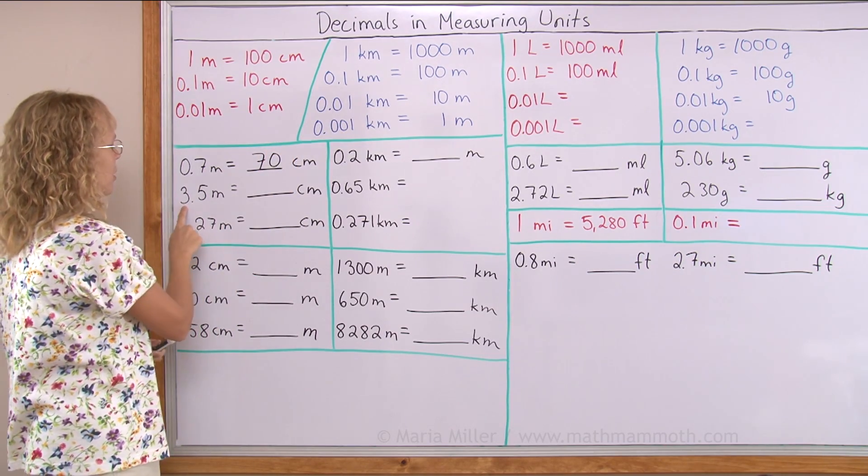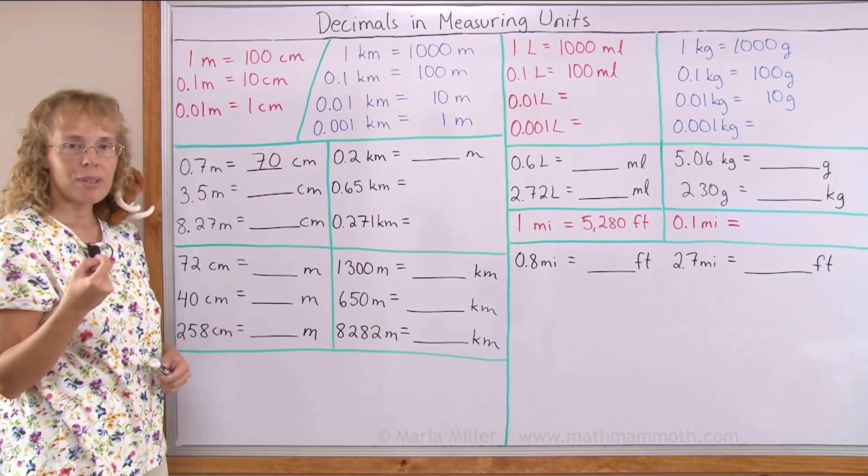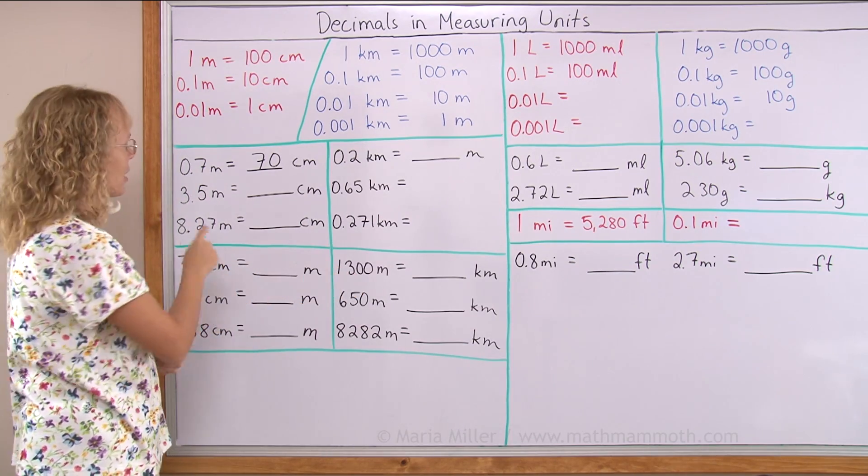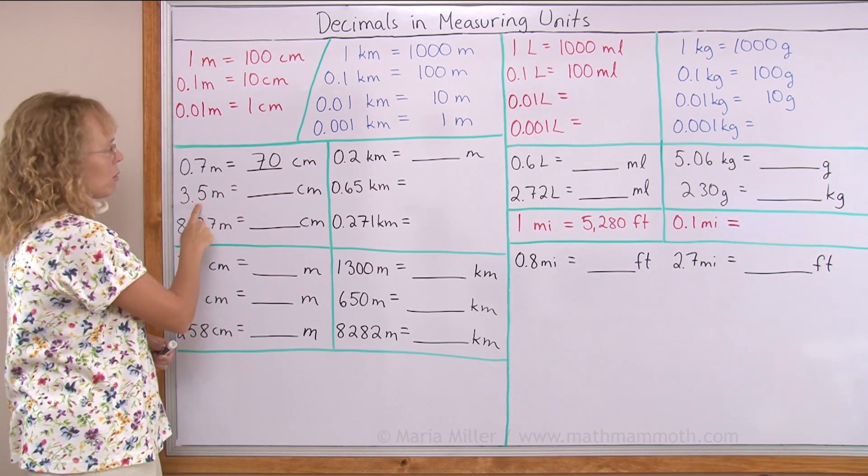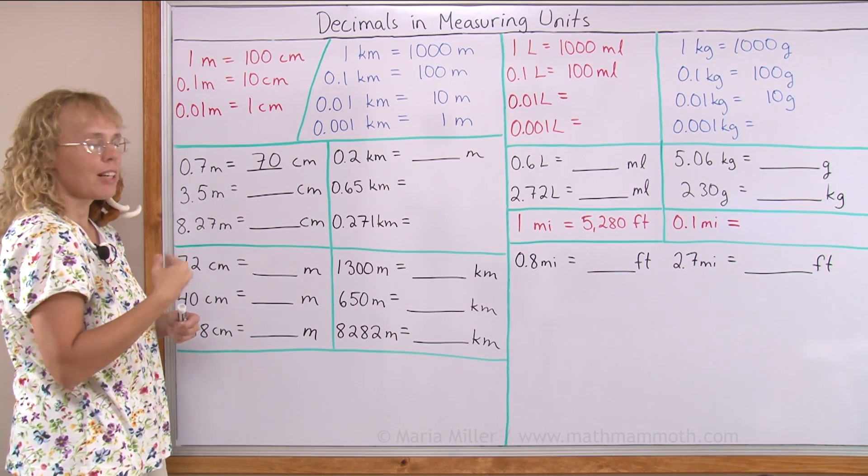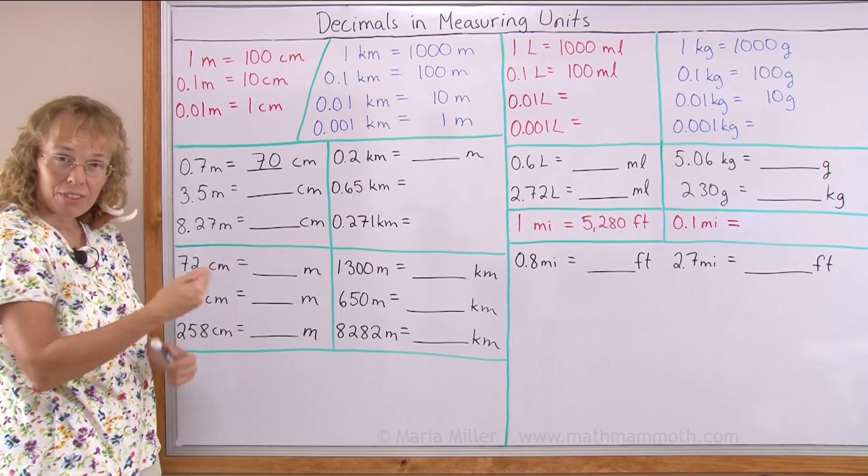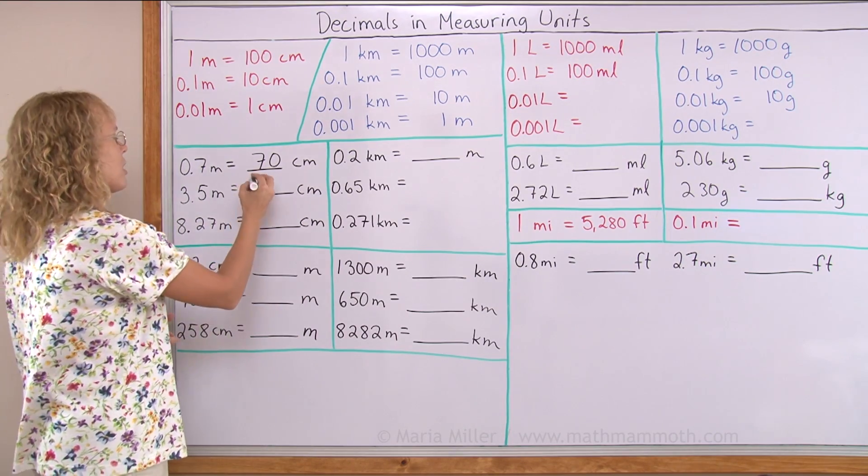Here we have 3.5 meters. 3 meters makes 300 centimeters. And then this 0.5 would be half of a meter, or five tenths. That would be 50 centimeters. So in total, 350.